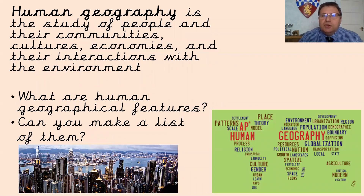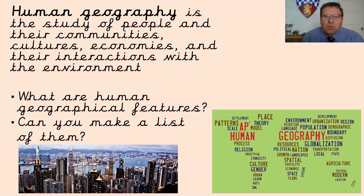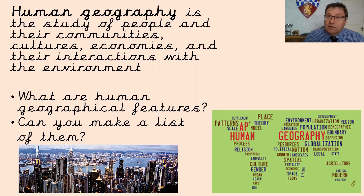Human geography is the study of people, their communities, cultures and economies, and their interactions with their environment — the landscape. So how the landscape and environment impacts on people and how people impact on their environment. What I want you to do is think about what human geographical features are. Can you make a list of them? Pause the video, make a list, and then we'll compare your list with mine on the next slide.